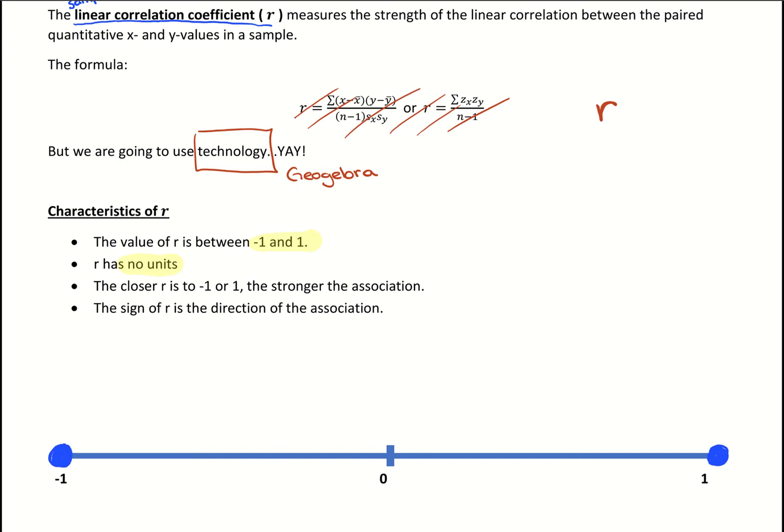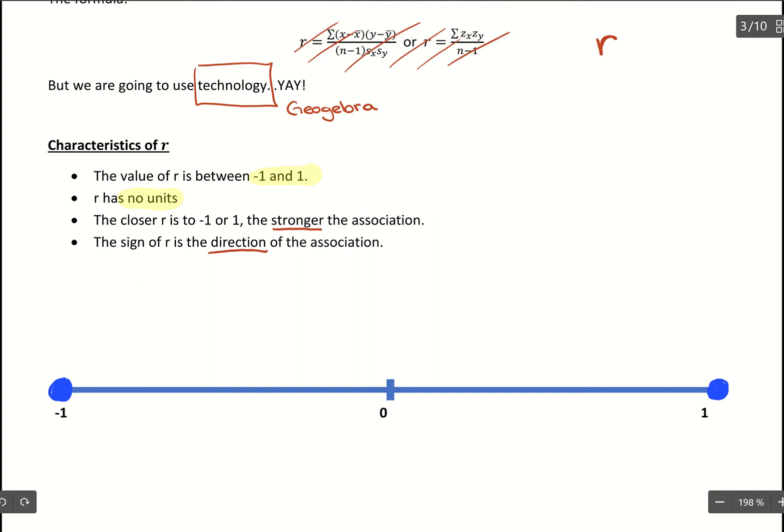Where we land on this number line tells us about the strength and direction of the data. Direction is easiest to see: if r is negative, it has a negative direction; if r is positive, it has a positive direction. If we land anywhere from negative 1 up to 0, that's a negative direction with a decreasing graph. If we land anywhere from 0 up to positive 1, that's a positive direction.